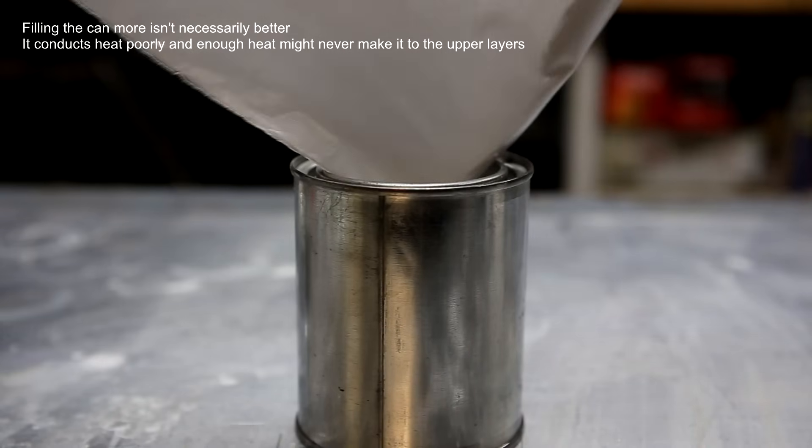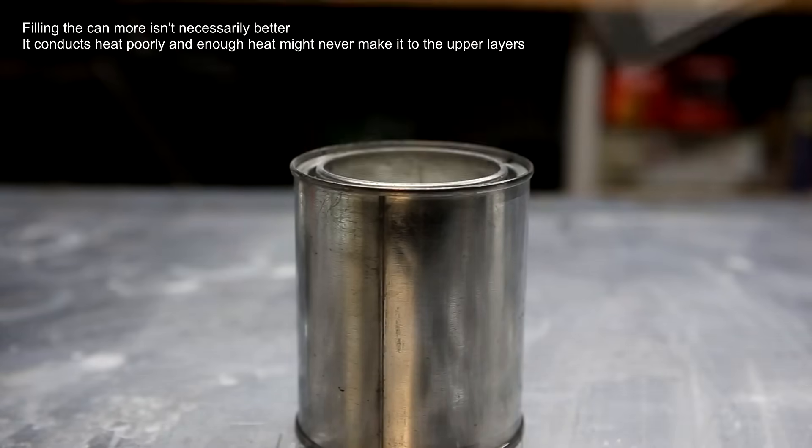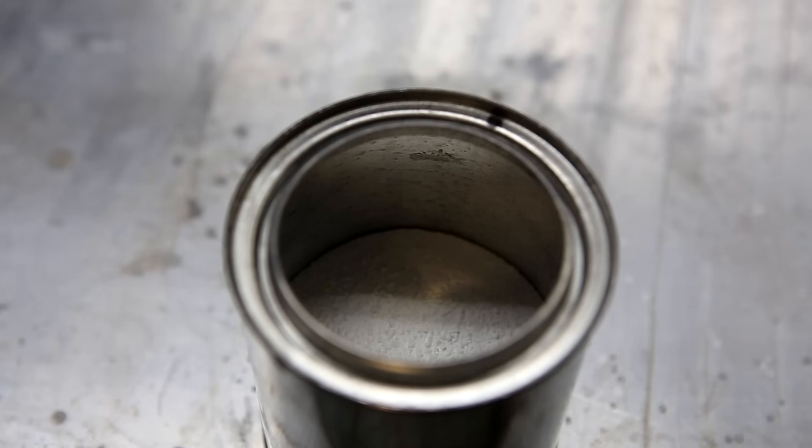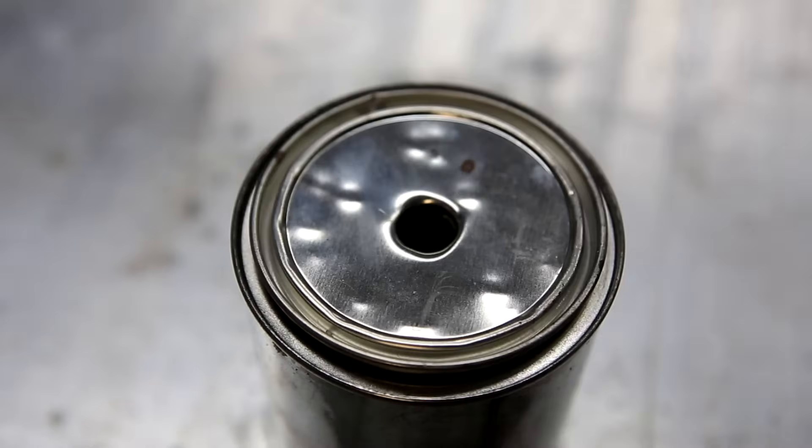The mixed powders were then added to an empty paint can. You can see here that the powder only fills about a fifth of the can. The paint can lid was placed on top with a pre-made hole.